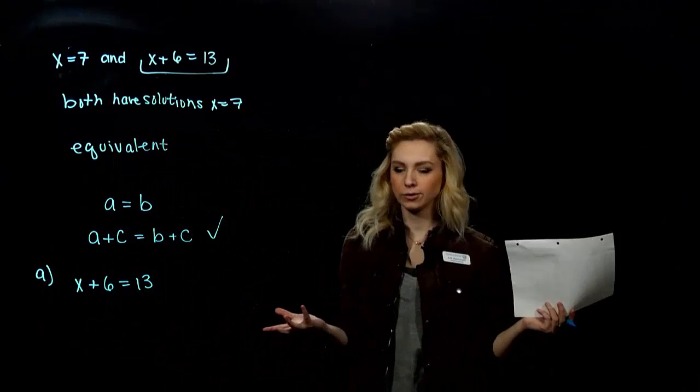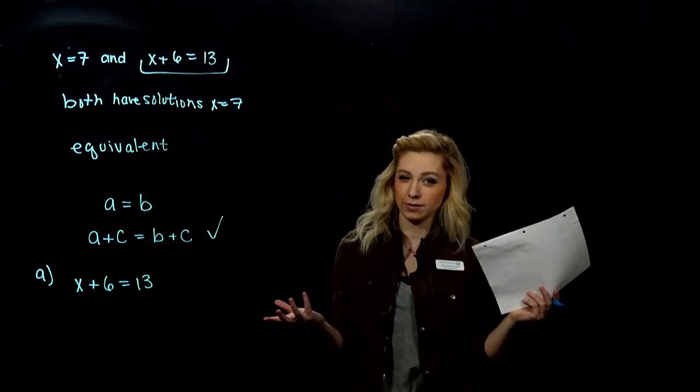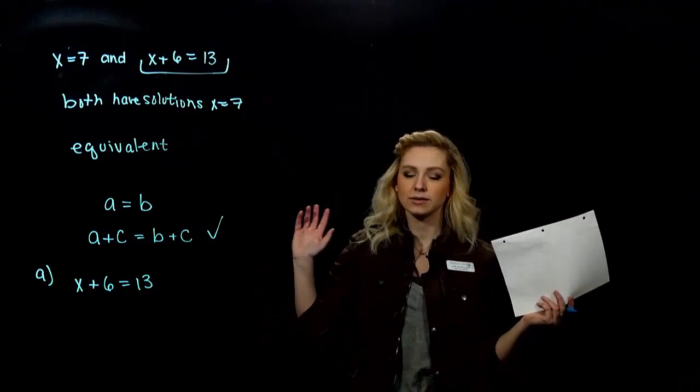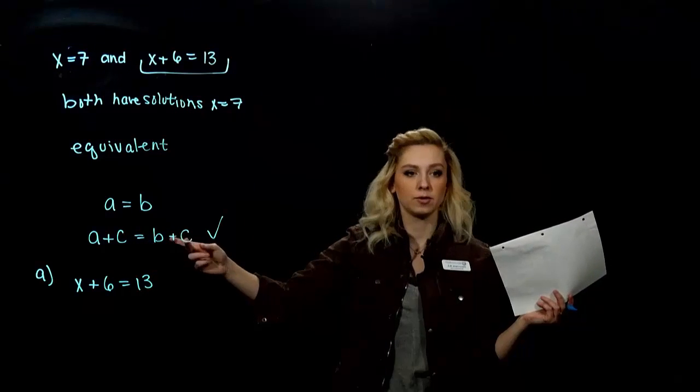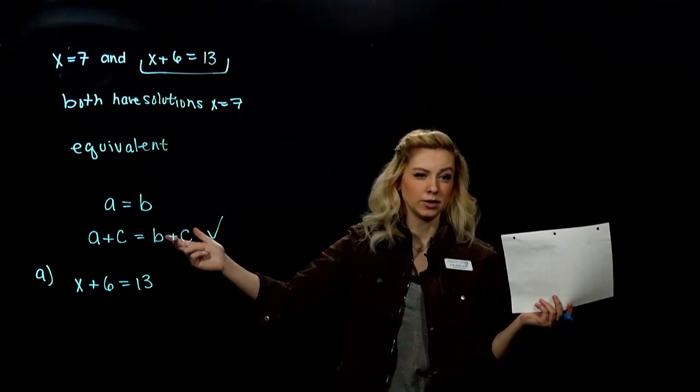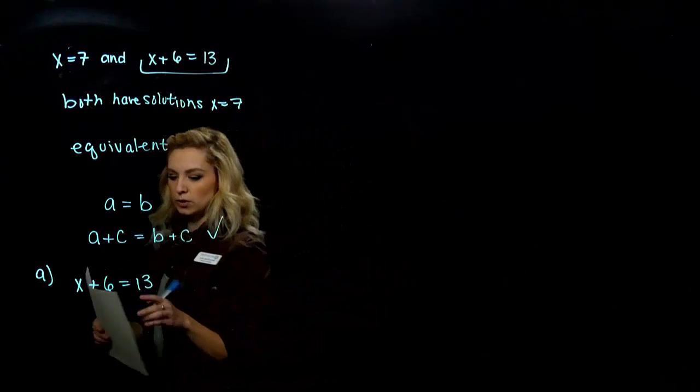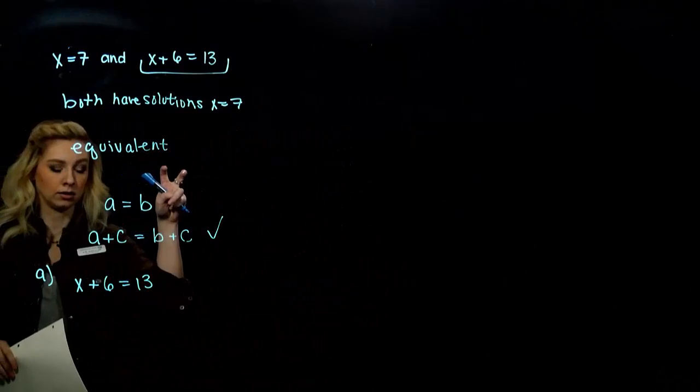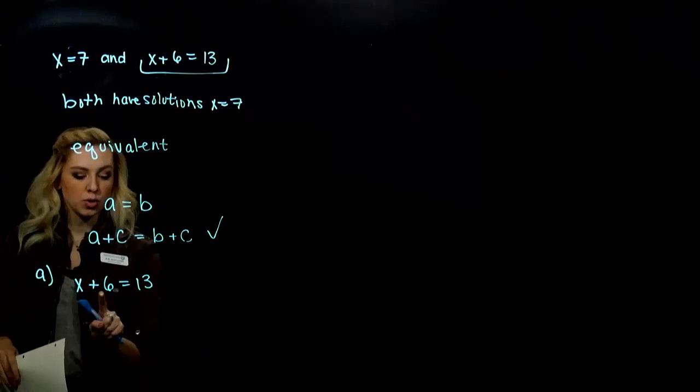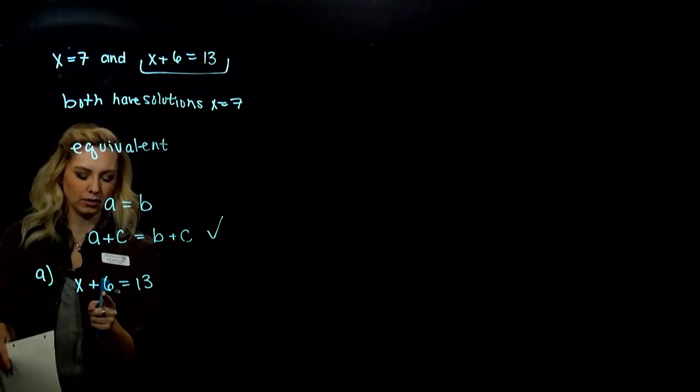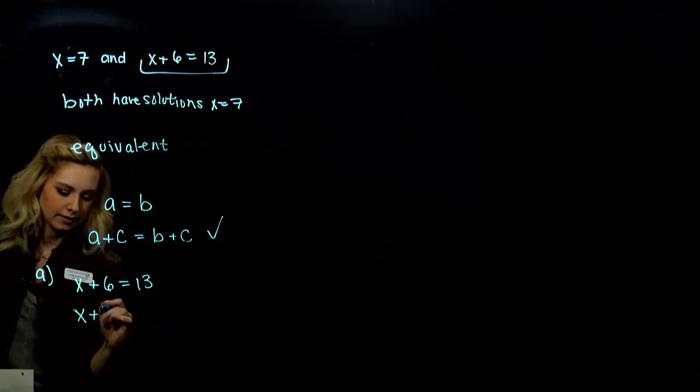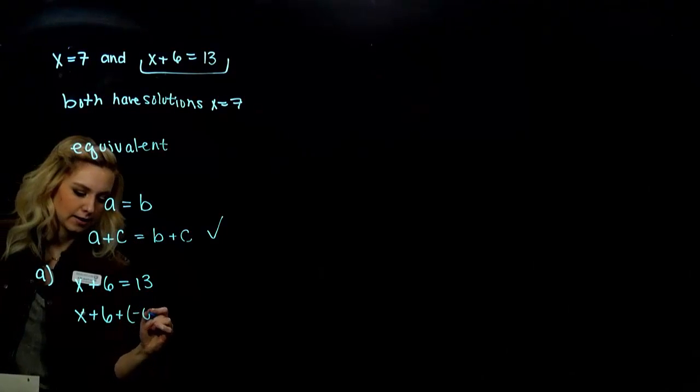So, we are only working with addition so far. We haven't talked about subtraction yet. We don't necessarily know that it's true. If I subtract something from both sides, it's still equivalent. So we need to work with addition, because that's what we've just shown. So what do I need to add to both sides to move this 6 or get rid of it? So I need to add its opposite. I need to add a negative 6.